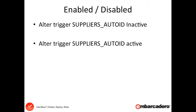After a trigger has been created, there may be a time when you need to disable it — for example if you're running maintenance or scripts against the database and you don't want those triggers to fire. You can do that using the ALTER TRIGGER statement with the trigger name and setting it to active or inactive, as the two example scripts shown here demonstrate. You can also do this using IB Console, so let's have a look at that example trigger and how we can set it inactive and active from there.